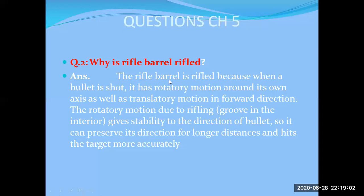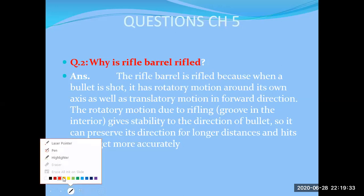The rifle barrel is preferred because when a bullet is shot, it has rotatory motion around its own axis as well as translatory motion in the forward direction. The rotatory motion due to rifling grooves in the interior gives stability to the direction of the bullet. Here are some benefits of rifling.